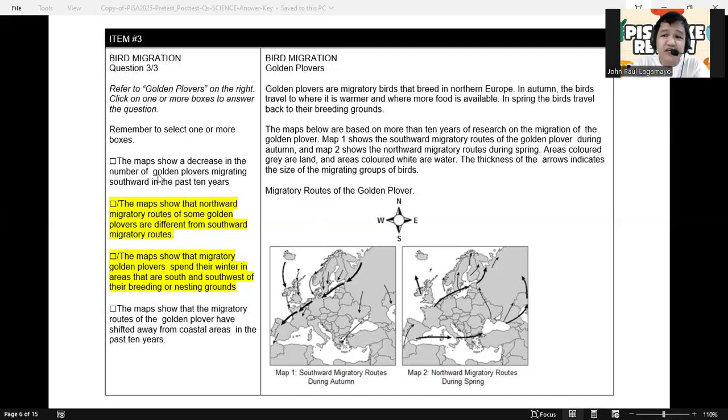Option number 2. The maps show that northward migratory routes of some golden plovers are different from southward migratory routes. Definitely, we can see here that the map 2, we have the northward migratory routes, are typically different from the cycle or from the system of the southward migratory routes. So this option is already correct.